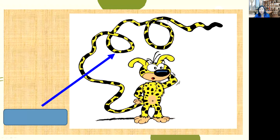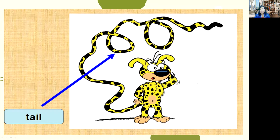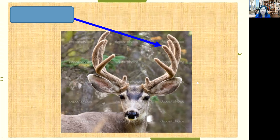What part of animal is this? Students said in the chat: tail. Nawa said tail, Koon said tail, Jani said tail — very good. This is a tail. Very good.